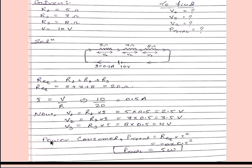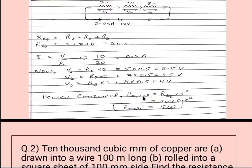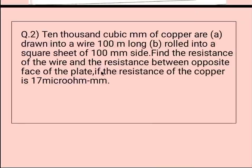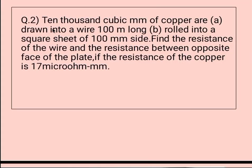Now coming to the second part of the question, power consumed. P total is equal to R equivalent into I square. We know this formula. We will put the value of R equivalent and I. After calculating this we will get P total is equal to 5 watt.